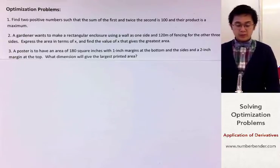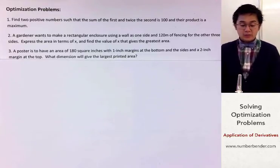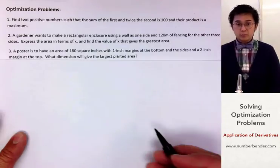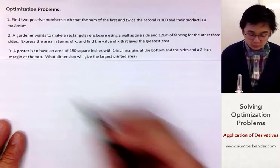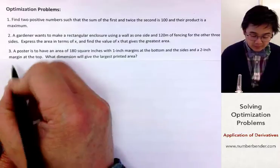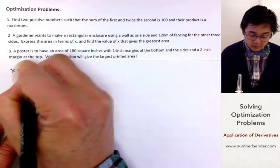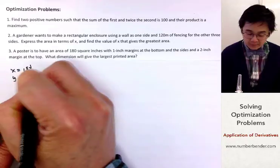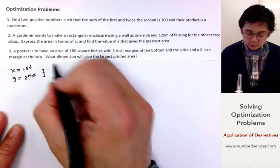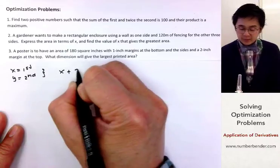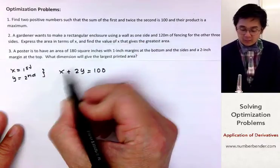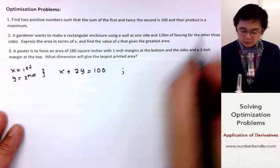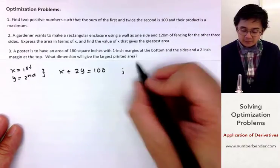For problem number one, we need to find two positive numbers such that the sum of the first and twice the second is 100. In answering optimization problems, we always work with two equations. Let x be the first number and y be the second number. The first equation is x plus 2y equals 100, and the product x times y needs to be maximized.